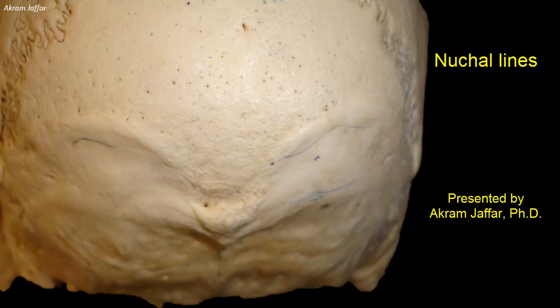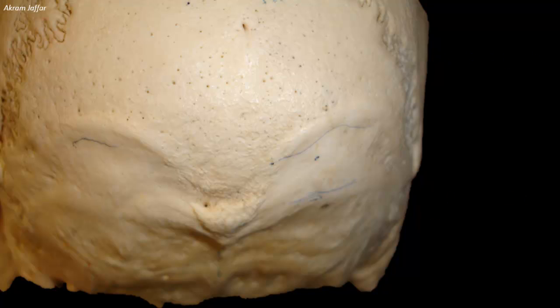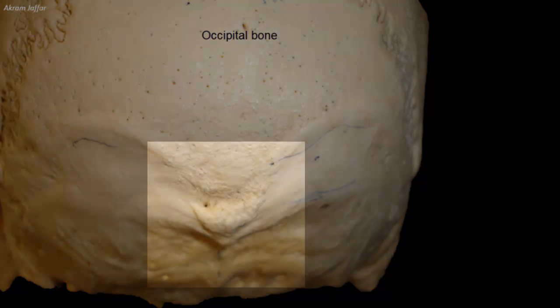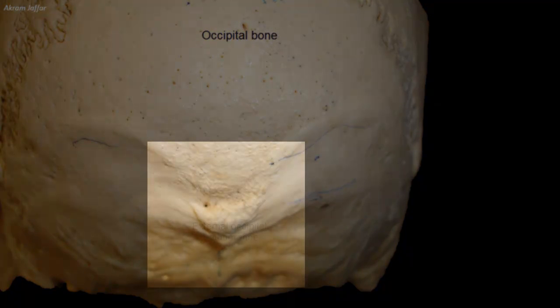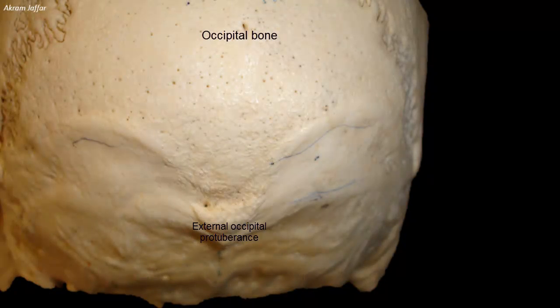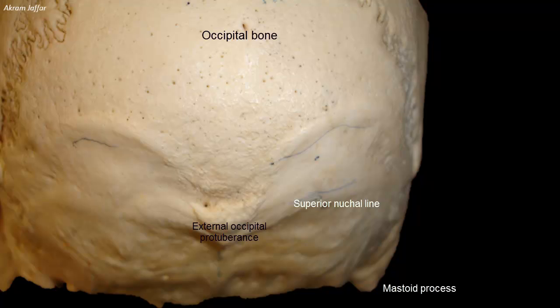This is a posterior view of the skull showing the squamous part of the occipital bone where the nuchal lines are located. Almost in the center is the external occipital protuberance, from which a ridge curves convex upwards towards the base of the mastoid process. This is the superior nuchal line. Nuchal means the back of the neck.